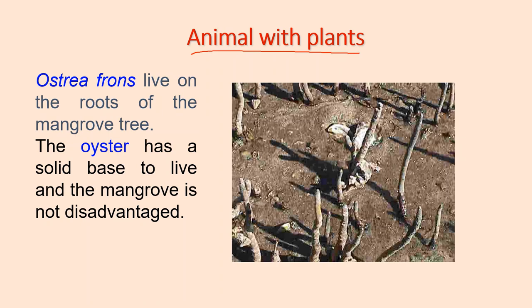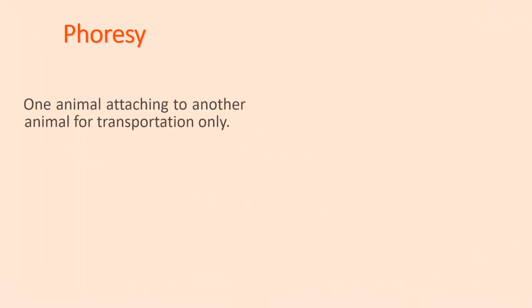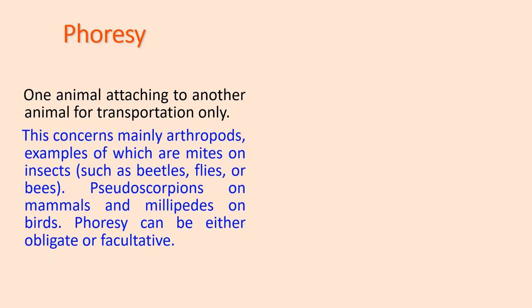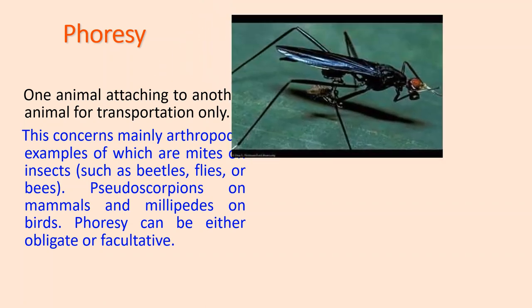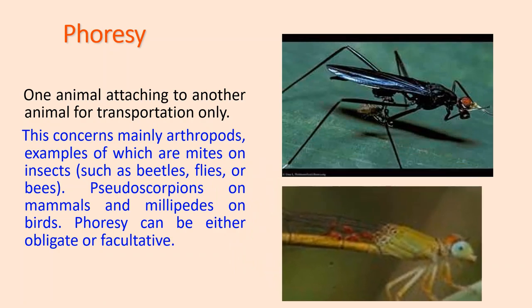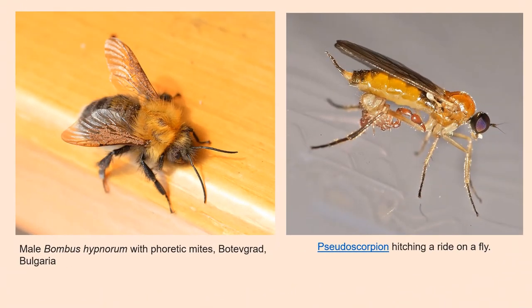The third category is phoresi, in which one animal attaches to another for transportation only. This concerns mainly arthropods — examples include mites on insects such as beetles, flies, or bees, and pseudoscorpions on mammals and millipedes on birds. Phoresi can be either obligate or facultative.